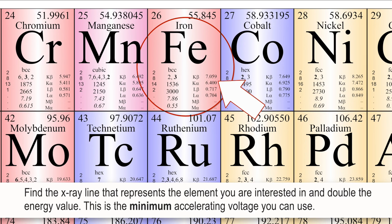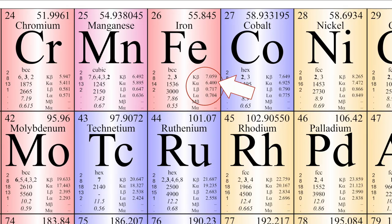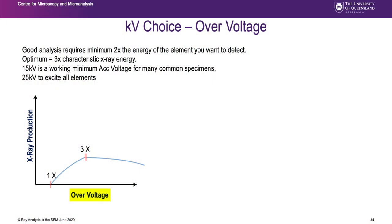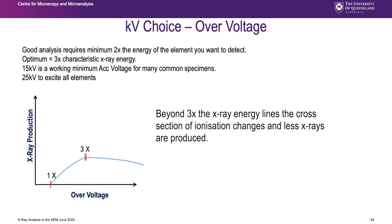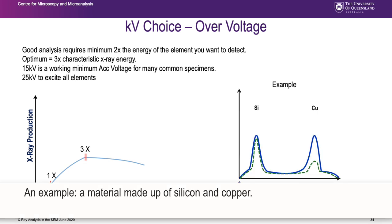The optimum accelerating voltage is three times the X-ray energy. For iron K-alpha at 6.4 keV, that means at least 15 kV and ideally 20 kV. This is the over-voltage - you need to be above the X-ray energy to stimulate production, and three times is ideal for maximum cross-section of ionization. Beyond three times the cross-section begins to fall off slowly. You really only notice this in transmission electron microscopes at 200-300 kV.